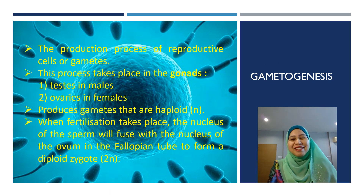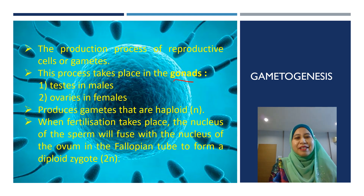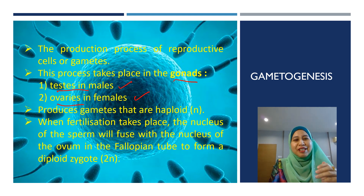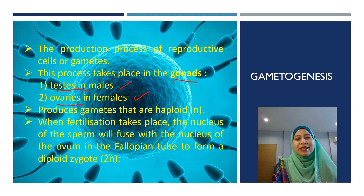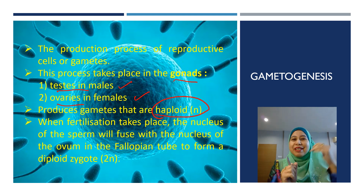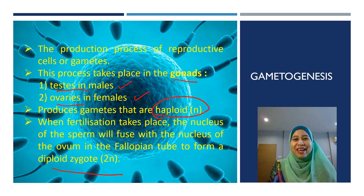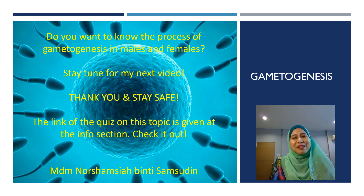Gametogenesis is a process to produce reproductive cells or gametes — that are ovum and sperm. This process takes place in the gonads: the testis in males and the ovaries in females. Gametogenesis produces gametes that are haploid. When fertilization takes place, the haploid nucleus of the sperm fuses with the haploid nucleus of the ovum in the fallopian tube to form a diploid zygote (2N). Stay tuned for the next video on the detailed process of gametogenesis in males and females.